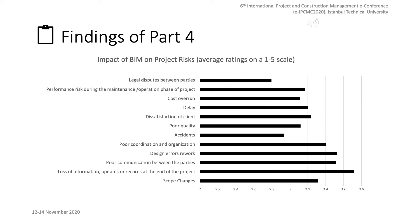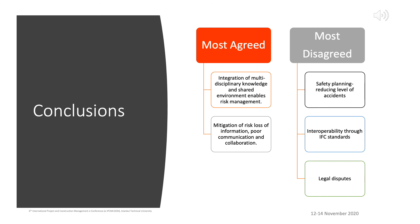Now, let me summarize the research findings and conclude. From the research findings, the most important aspects of BIM are the integration of multidisciplinary knowledge and a shared environment that enables communication and collaboration for risk management. The mediation of risk of loss of information or updates, poor communication, and poor collaboration between parties are aspects mostly highlighted in this research. On the other hand, safety planning and reducing the level of accidents, as well as interoperability through IFC standards, are the most conflicting issues regarding the utilization of BIM in risk management. Some respondents stated that legal risk may even arise when BIM is used in project management. The utilization of BIM, especially for risk mitigation and assessment during the project lifecycle, is seen as useful for experts experienced in the Turkish construction industry.